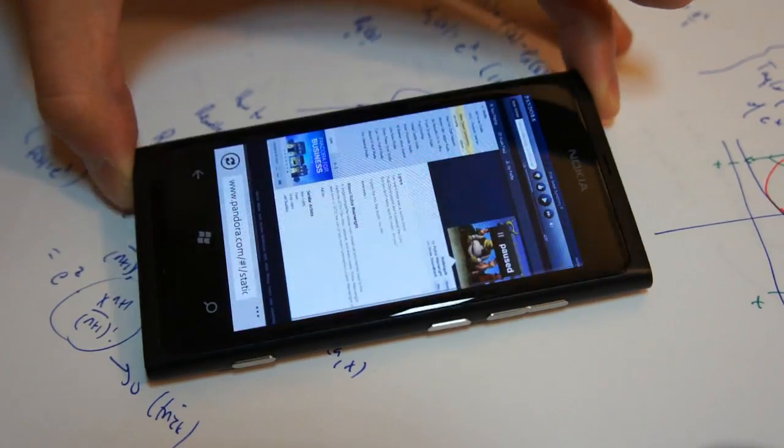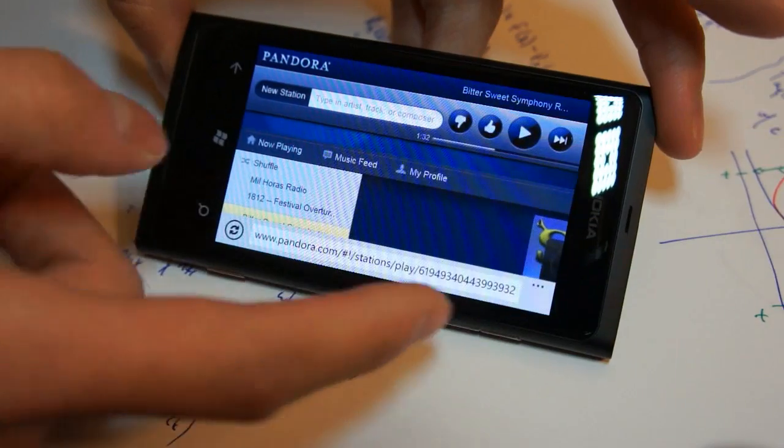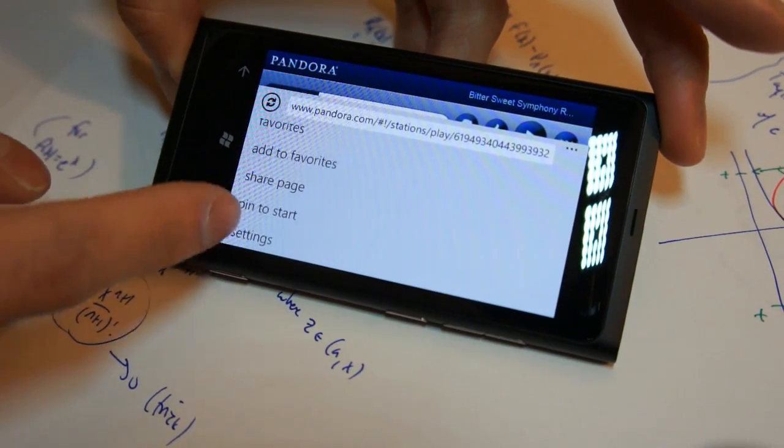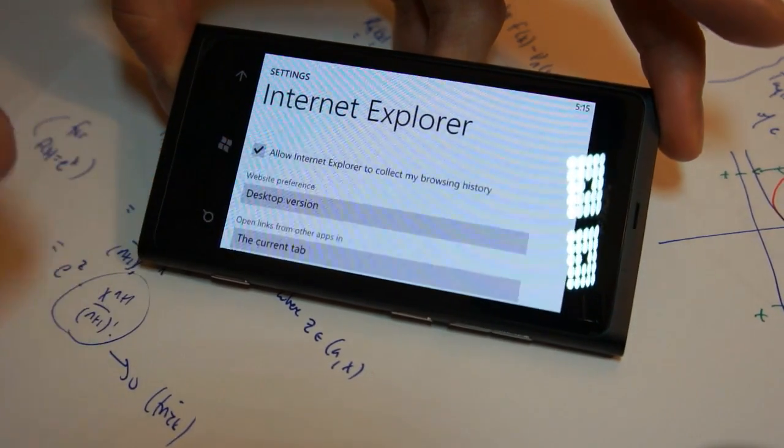What I figured out you could do is load Pandora's website on the HTML5 enabled web browser on Windows Phone Mango. What I had to do for that is go to settings and set my website preference to desktop version.